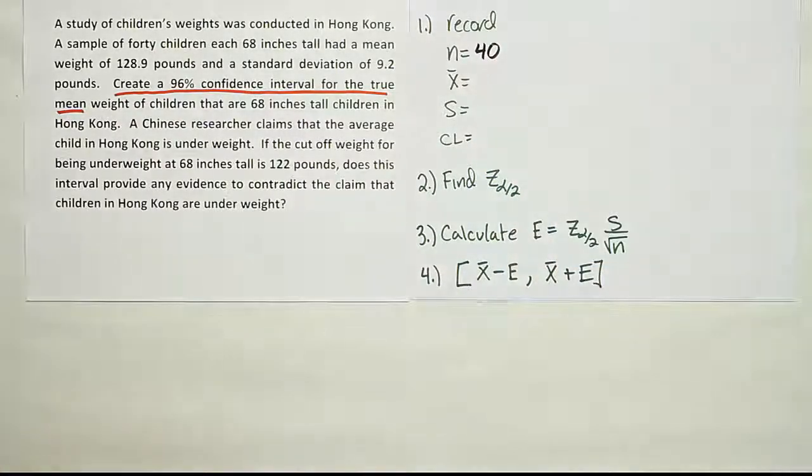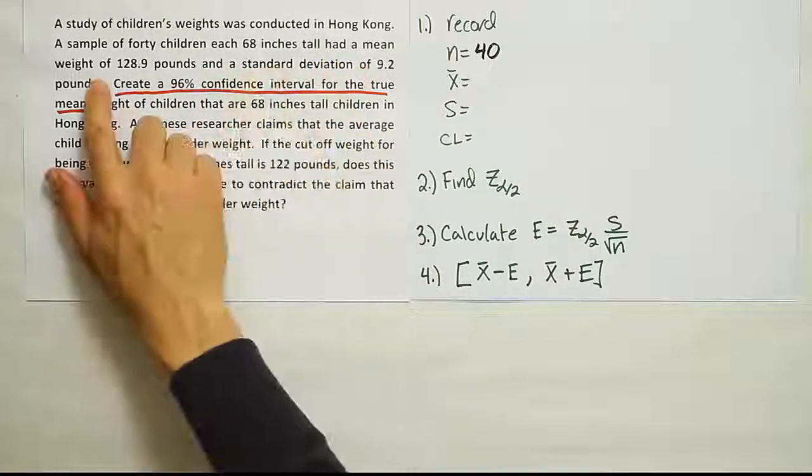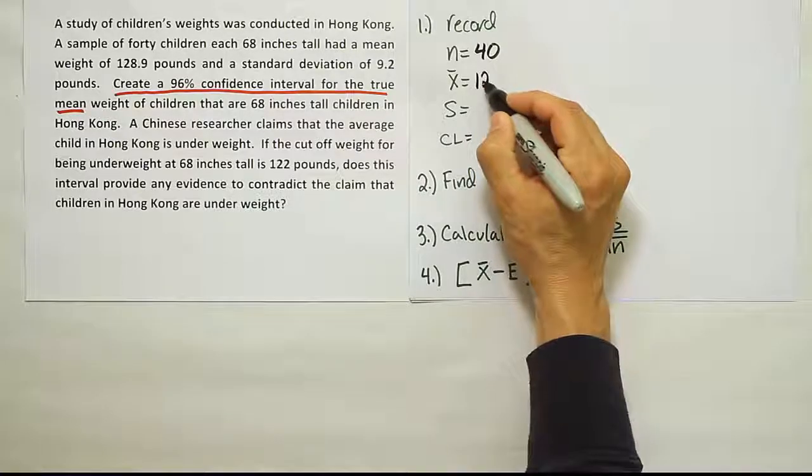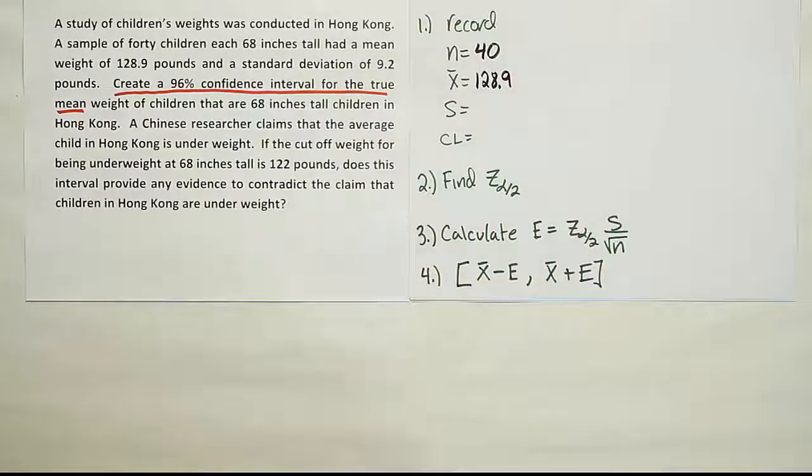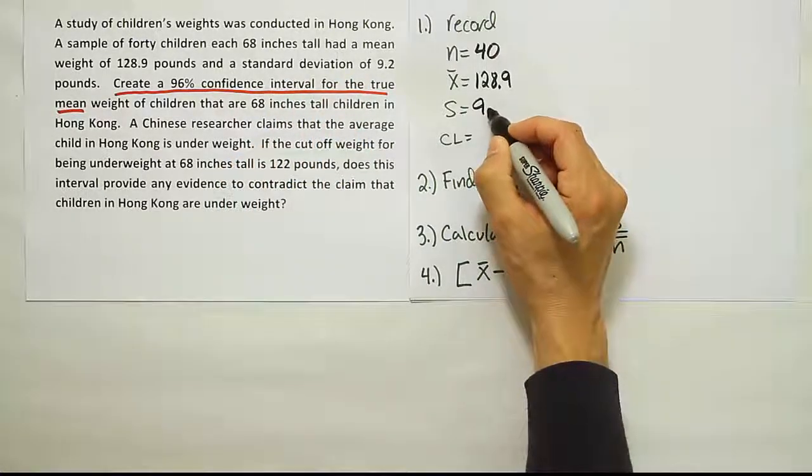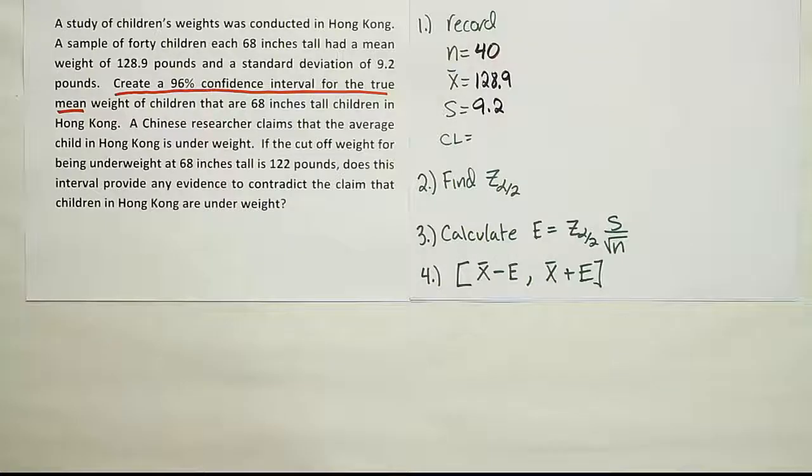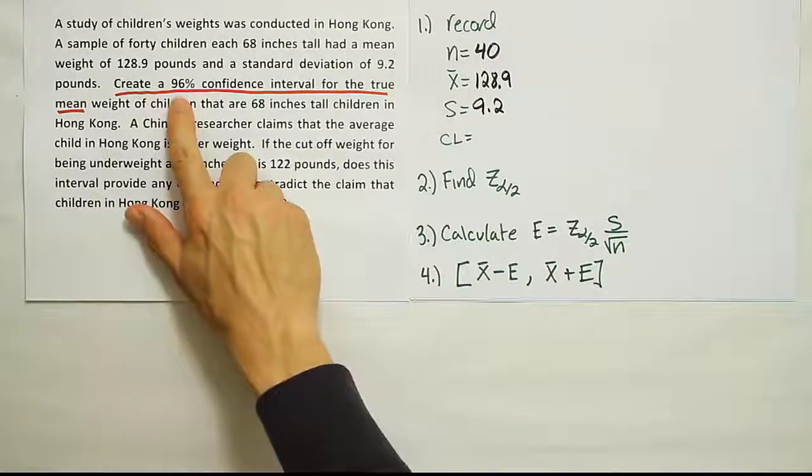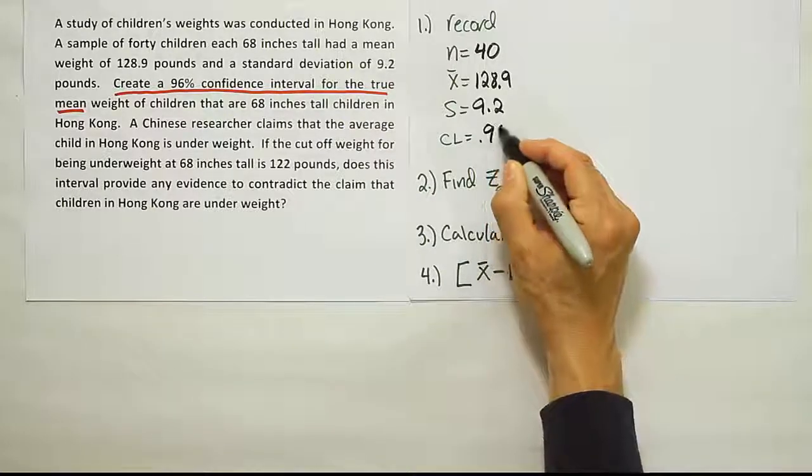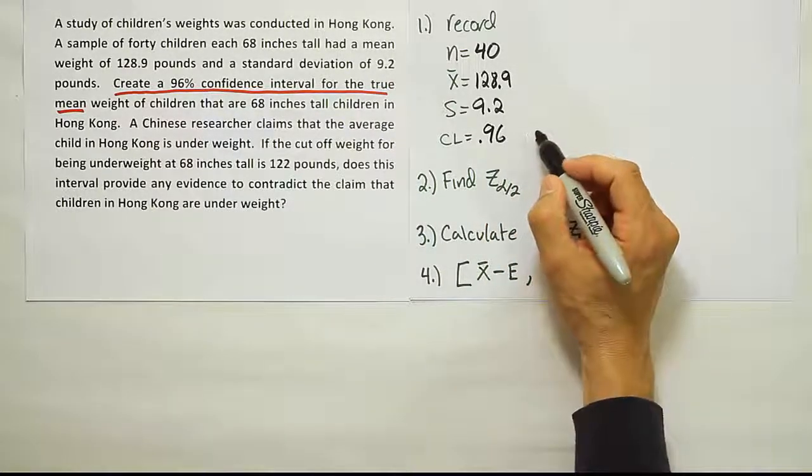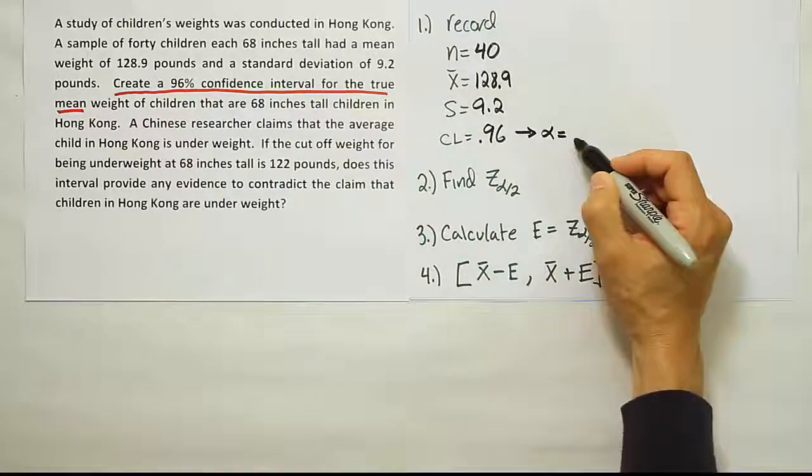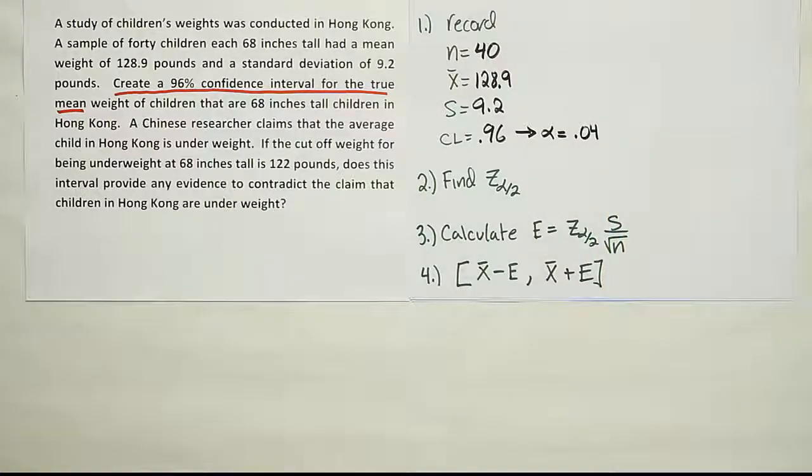All right, then they tell us that the sample mean, it says they had a mean weight of 128.9 pounds, 128.9 pounds. And then it says a standard deviation of 9.2 pounds. That's 9.2. It's clear that the confidence level is 96%. So let's go ahead and put 0.96 or 96%, however you want to write that is fine. And then, of course, that leads to the idea that alpha is equal to 0.04, right? Alpha is 0.04.